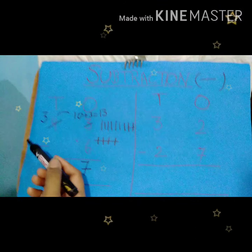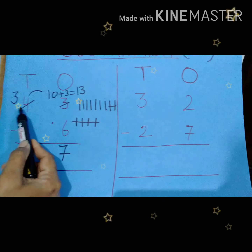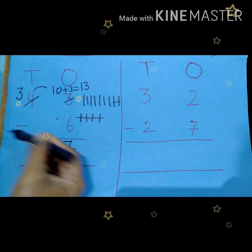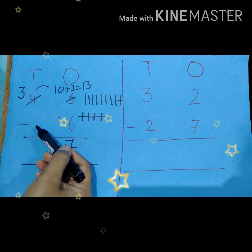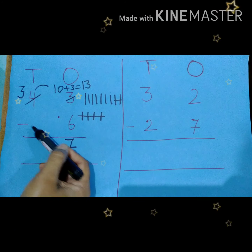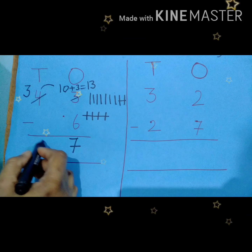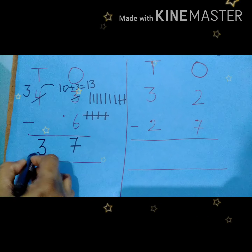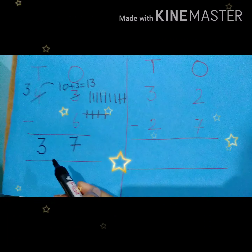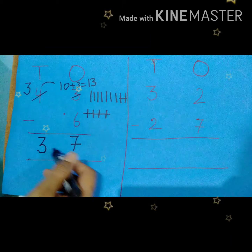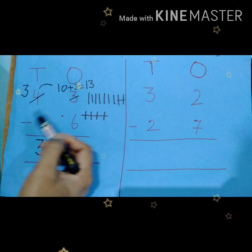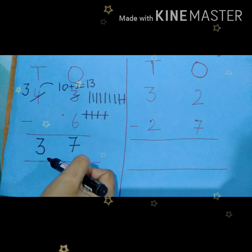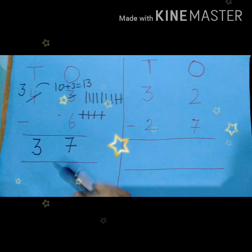Now look at the 10's place — here 3 is left. Nothing is there below it. So this 3 will be written as it is here. So now our answer is 37. 43 minus 6 is equal to 37.